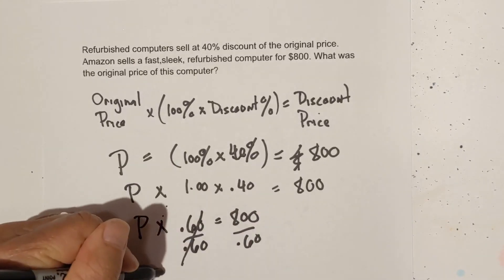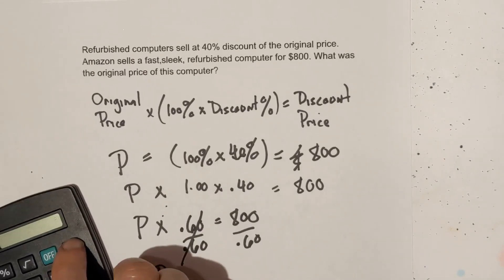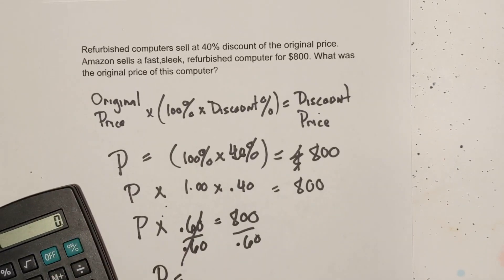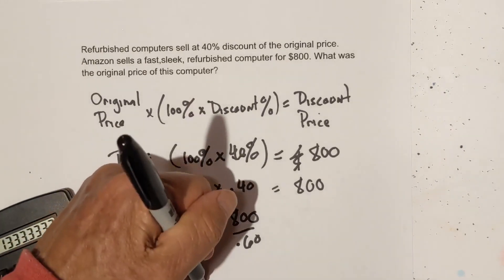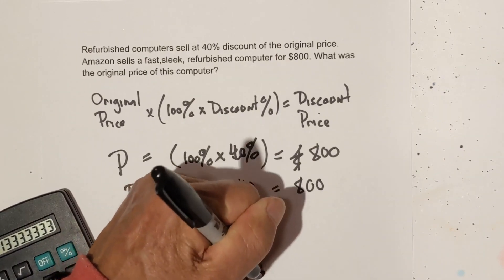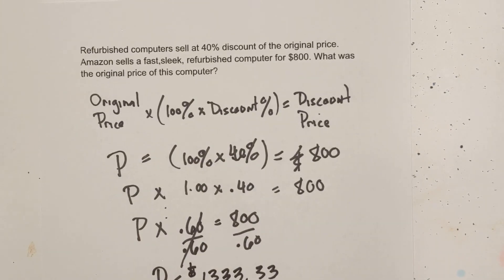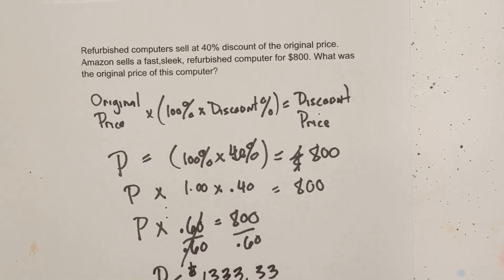So P equals 800 divided by 0.6. And let me get my trusty calculator out. 800 divided by 0.6 equals $1,333.33. So there's our discount. That was our original price is $1,333.33.